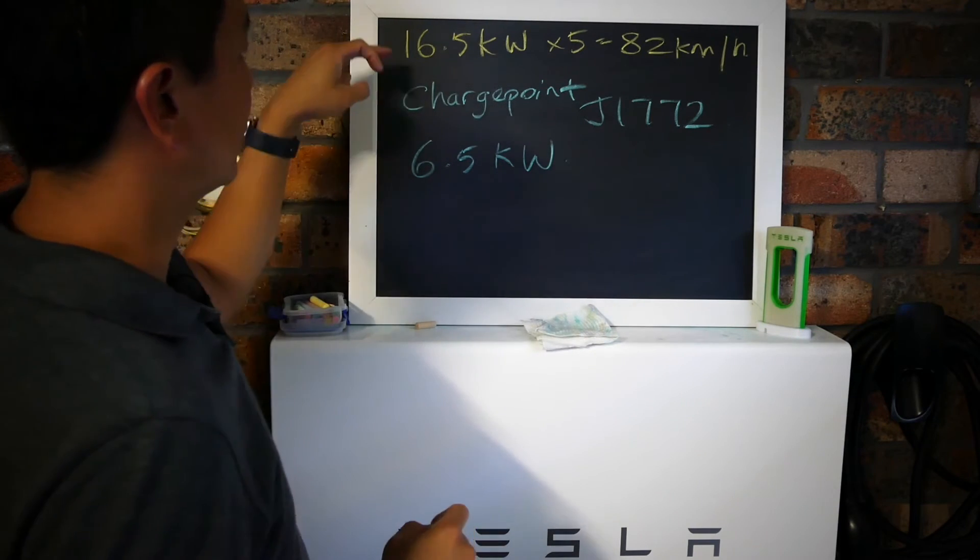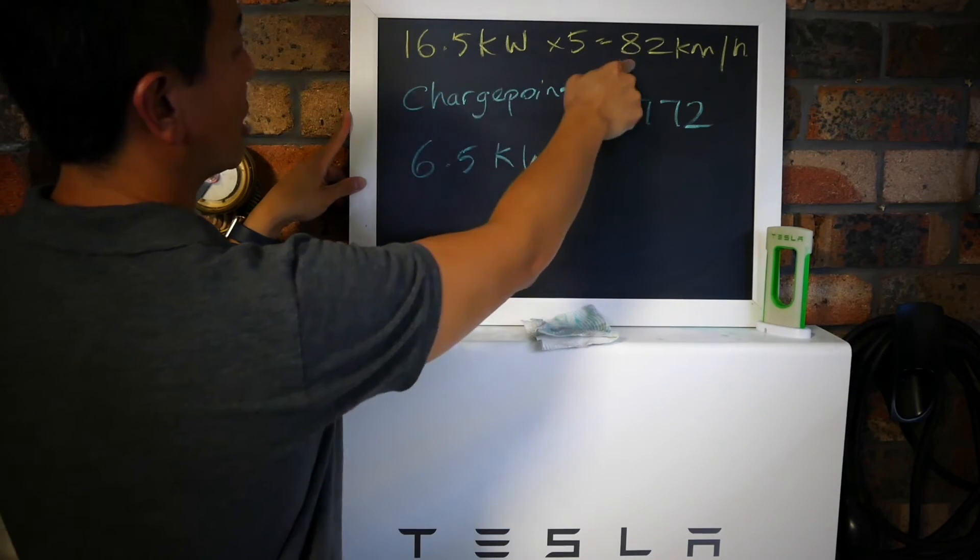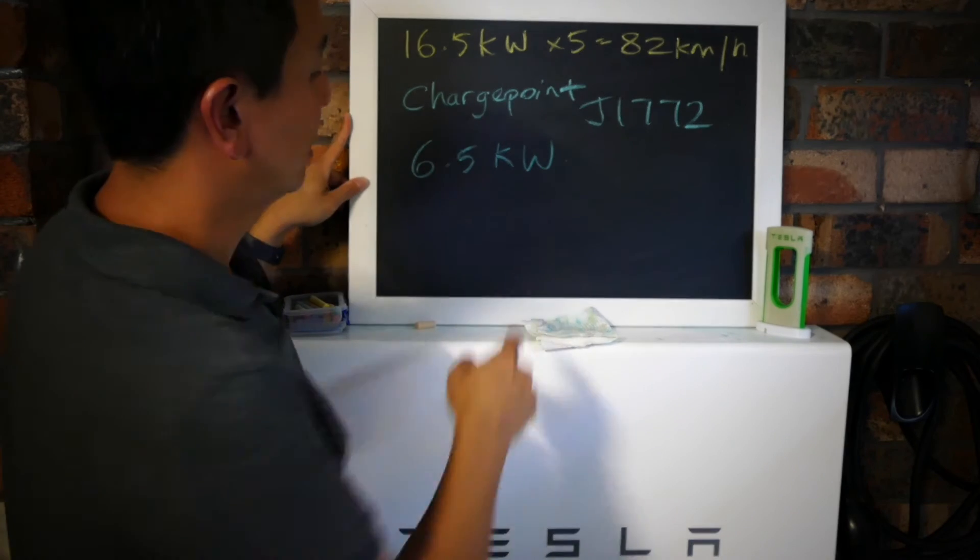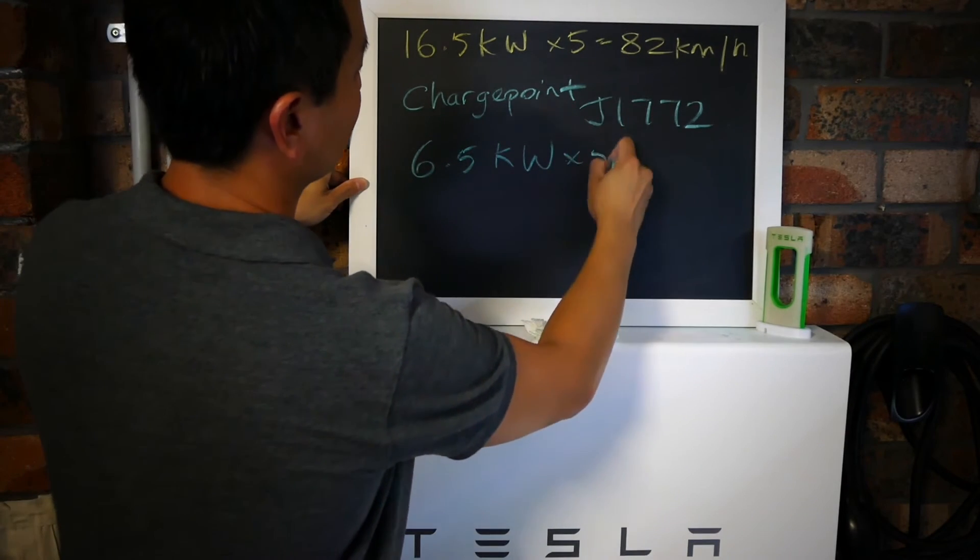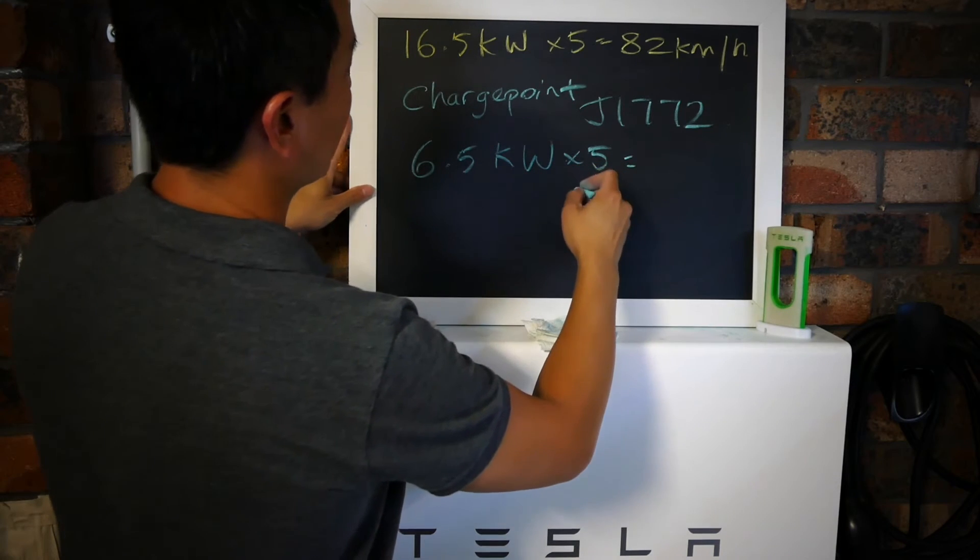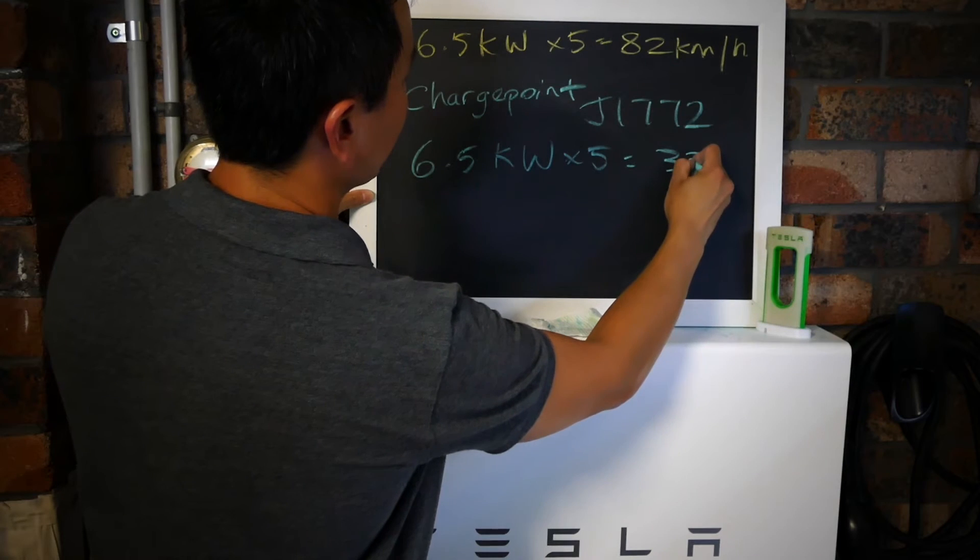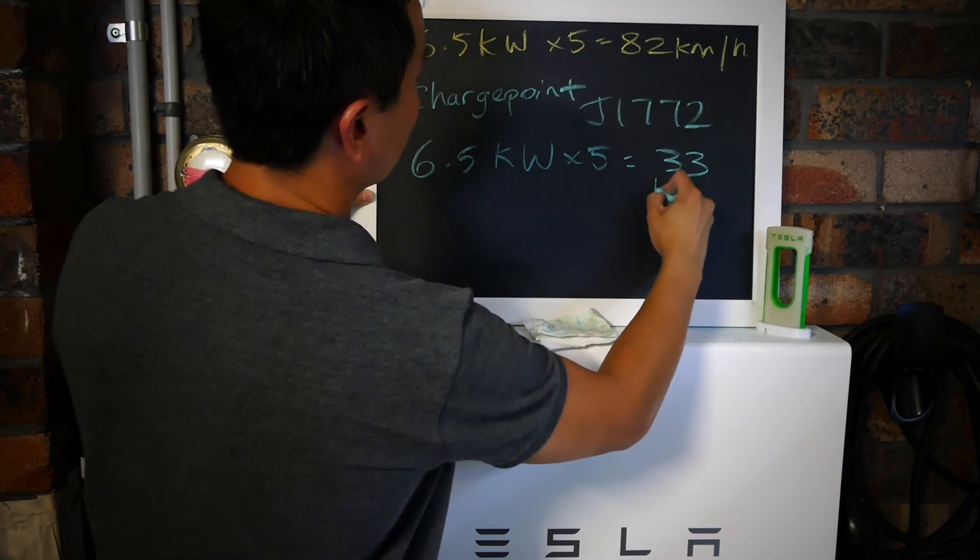The only downside is they can only charge at 6.5 kilowatts. In this case, you're not limited by your car's charger, you're limited by the charger. 6.5 kilowatts times five will get you about 33 kilometers an hour of charging.